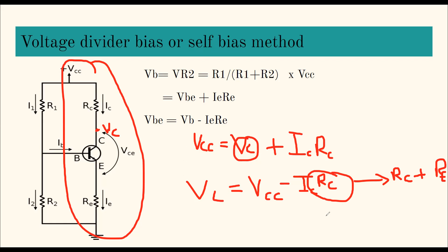I recommend tabulating all the biasing formulas: first column for fixed bias, second for collector-to-base bias, third for voltage divider bias — then list the final equations in each column. This will be very helpful in exams. Notice that in none of the voltage divider bias equations does beta appear, confirming this method is independent of beta. Even if you replace the transistor with a different beta, the operating point is not affected.